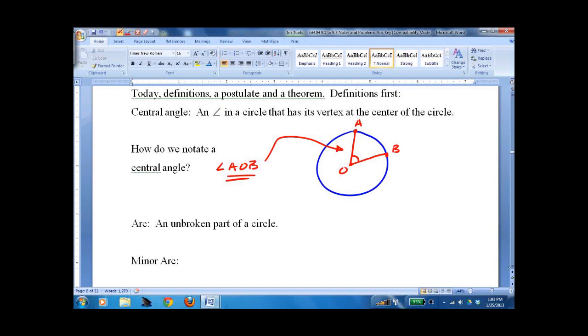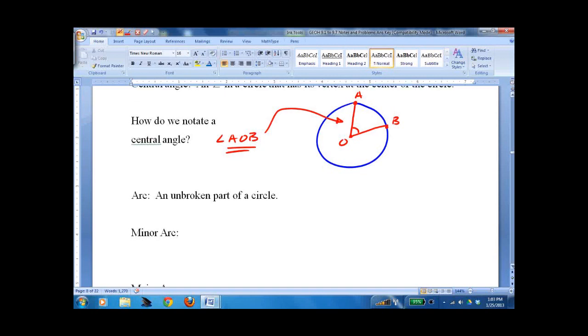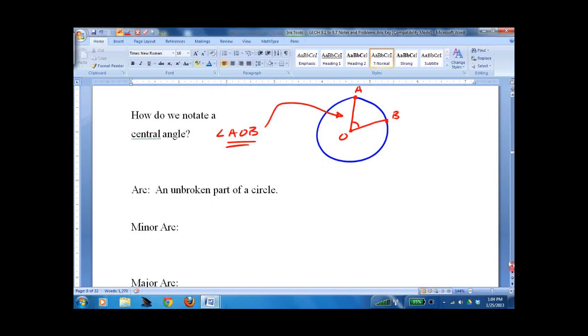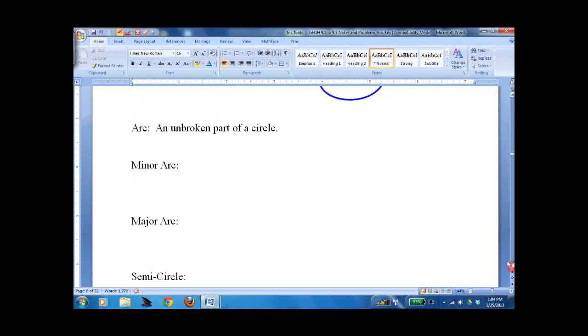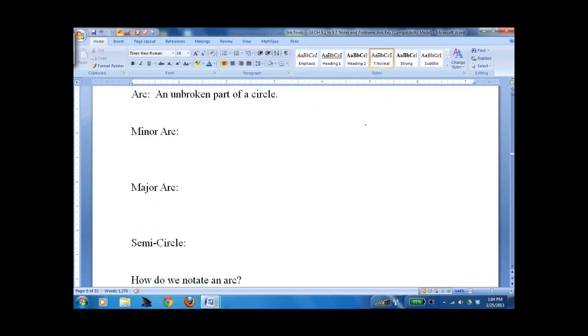What's an arc? Well, it's an unbroken part of the circle. We have to move down here. So here we go. Call it Circle O again.